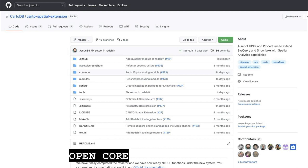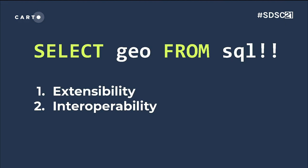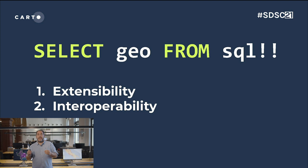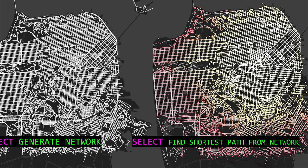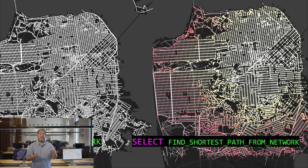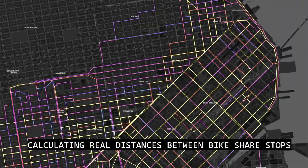I want to show you a few examples of when you mix SQL with spatial, showcasing the extensibility and interoperability of this paradigm. First: imagine creating routes with a SQL statement. You have one process to generate a network from OpenStreetMap, create the network for routing with the first statement, and then use commands like find shortest path to find the shortest path, create isolines, and things like that. So instead of calculating geographic distance between two points, you can calculate distance based on the route a bike rider would take from one stop to another — all within SQL.